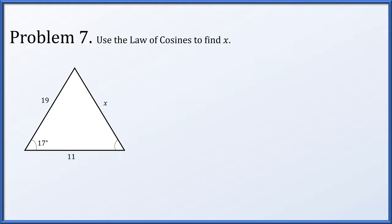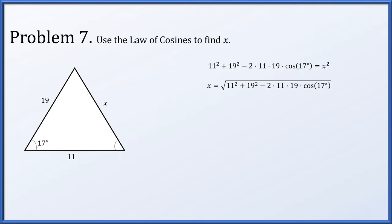Problem seven: use the law of cosines to find x in the given diagram. The law of cosines is like a generalized Pythagorean theorem — one side squared plus another side squared equals the third side squared, with a correction term of minus 2 times the product of those two sides times the cosine of the angle between them. Since we have the angle between 11 and 19, we compute 11 squared plus 19 squared minus 2 times 11 times 19 times cosine 17 degrees, and that equals x squared. Solving, x is the positive square root — approximately 9.07.